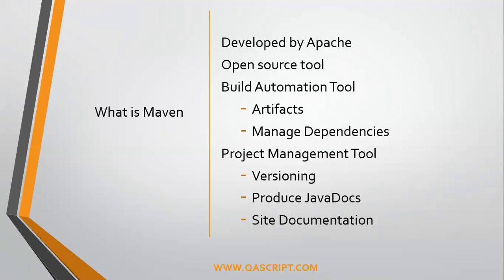Maven also manages all the dependencies of your project. In earlier days, we used to manage all our project requirements or dependencies in the form of jar files within our project. If it's a small project, it's very easy to manage those dependencies. But as the project grows, there will be thousands of dependencies which might be required, and it's virtually impossible to manage them individually. That's where Maven comes in — it helps manage all our dependencies with the help of a single pom.xml file.